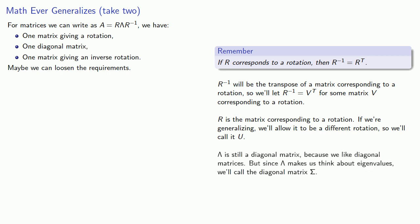And λ is still a diagonal matrix because we like diagonal matrices. Remember, diagonal matrices are very easy to work with. But since λ makes us think about eigenvalues, we'll actually call this diagonal matrix Σ. And so the question is, can we write all matrices in the form A equals U Σ V^T, where U and V correspond to rotations, and Σ is a diagonal matrix? And the answer is yes!